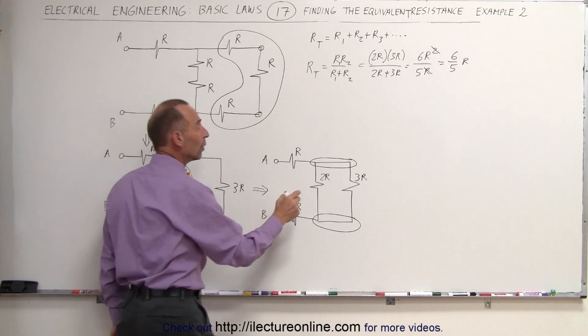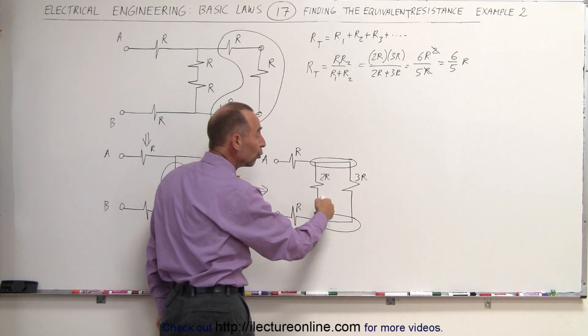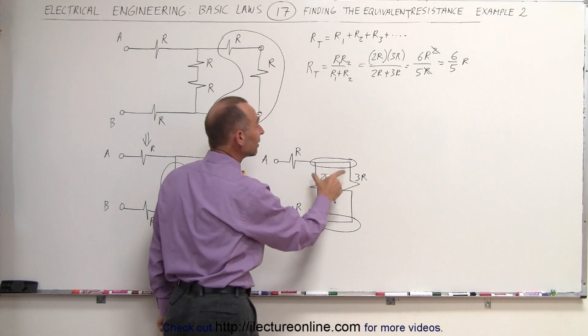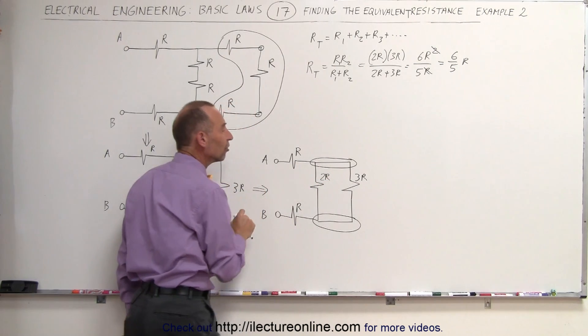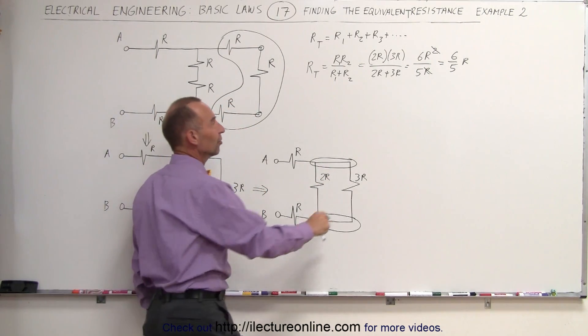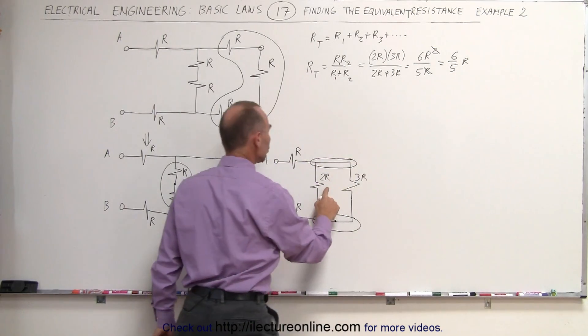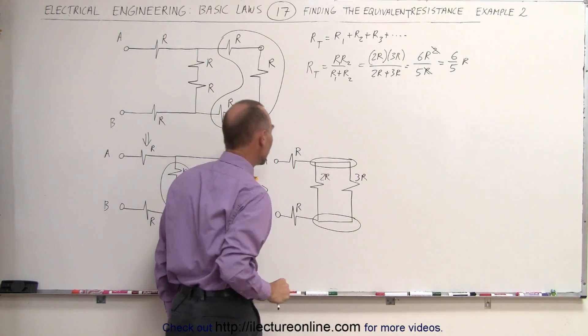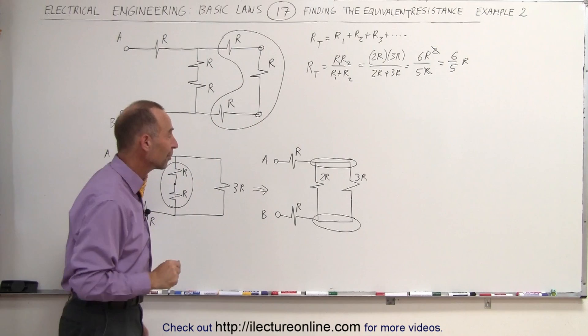Remember that when you have two resistors in parallel, or two or more resistors in parallel, that the equivalent resistance is always smaller than the smallest of the resistors there. Since 6 fifths is smaller than 2, therefore that probably, at least, is plausibly the correct answer.